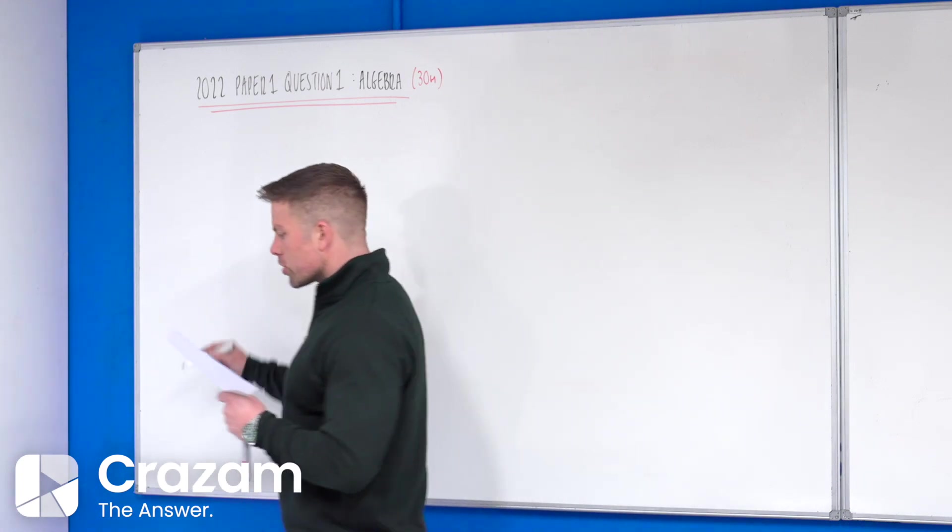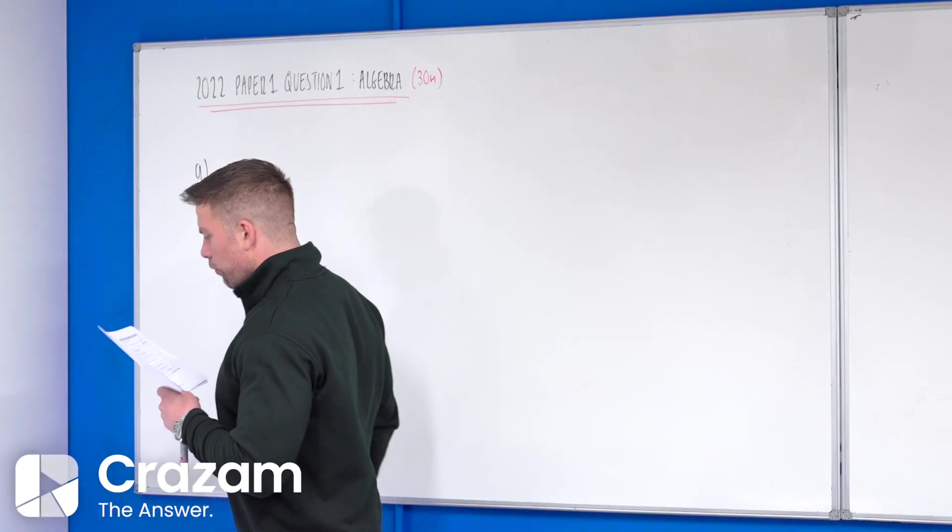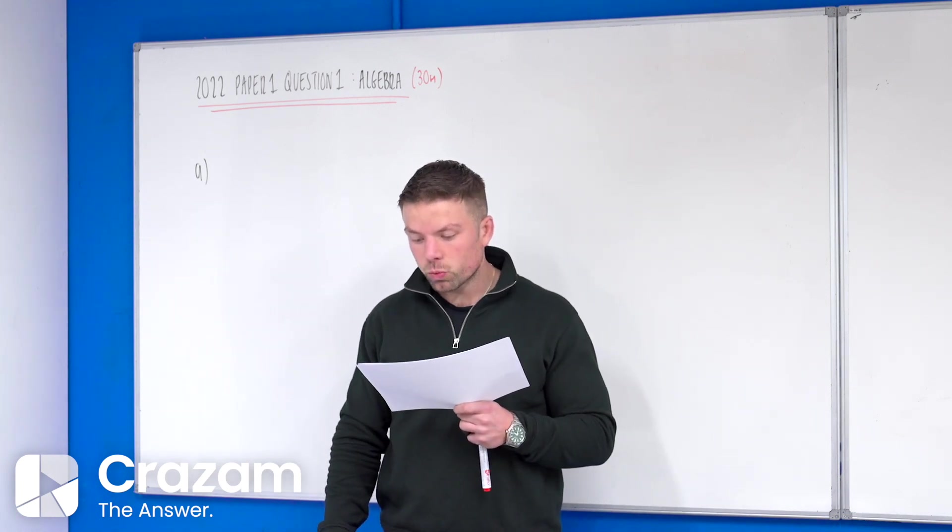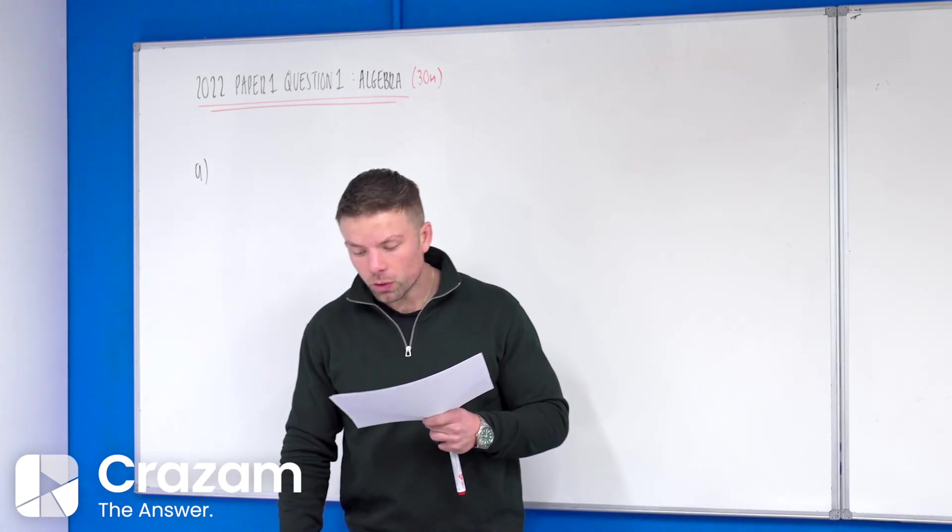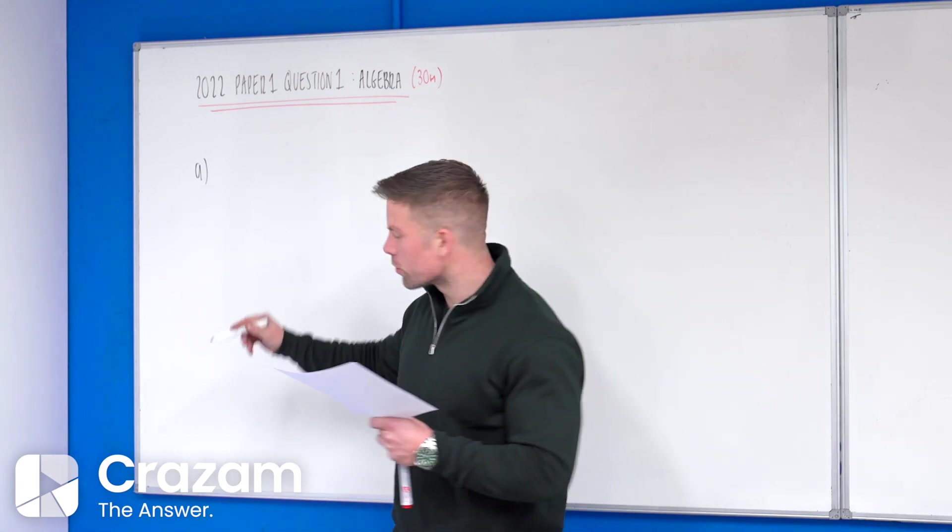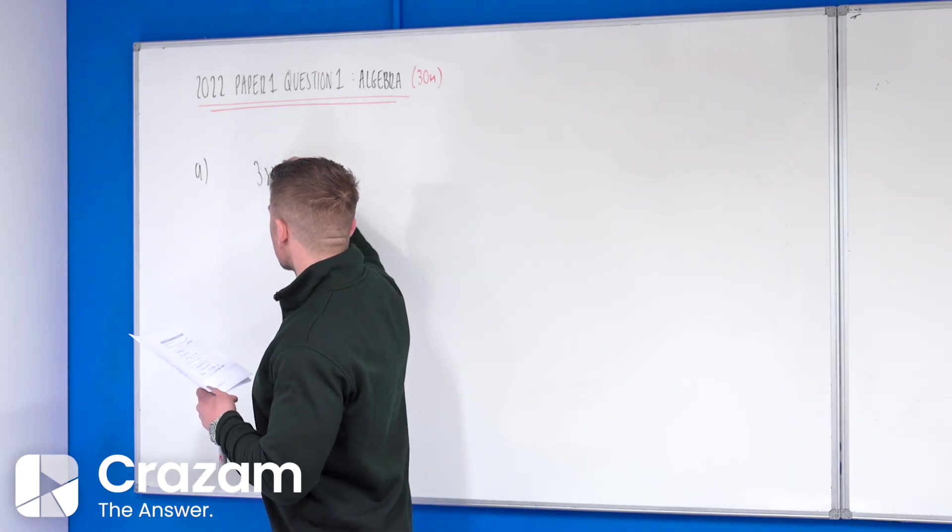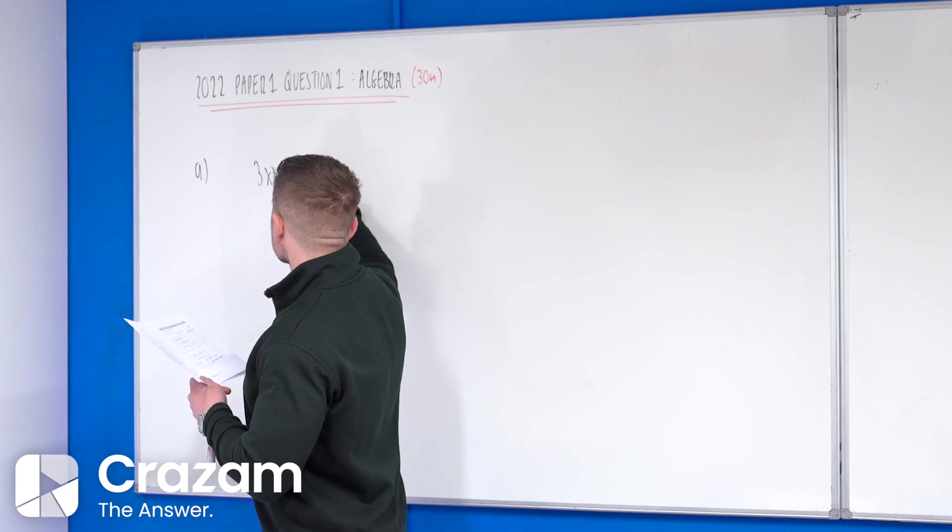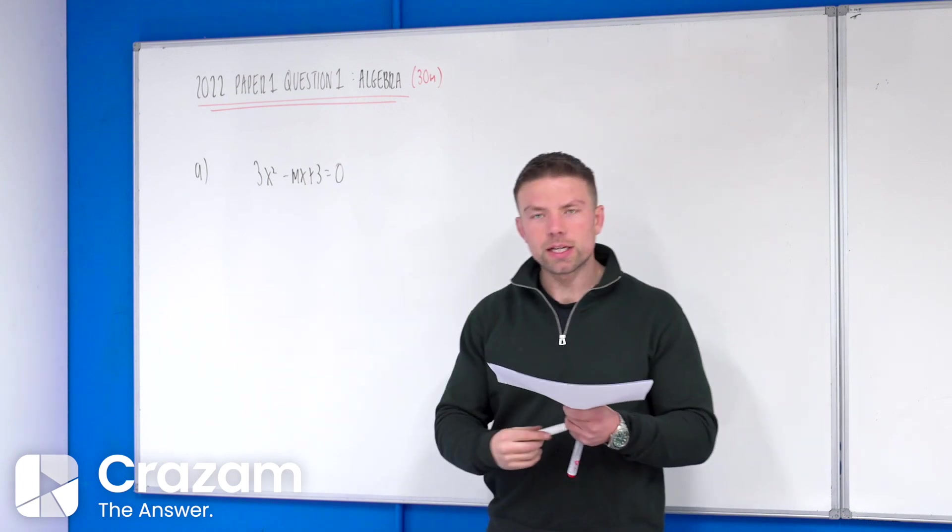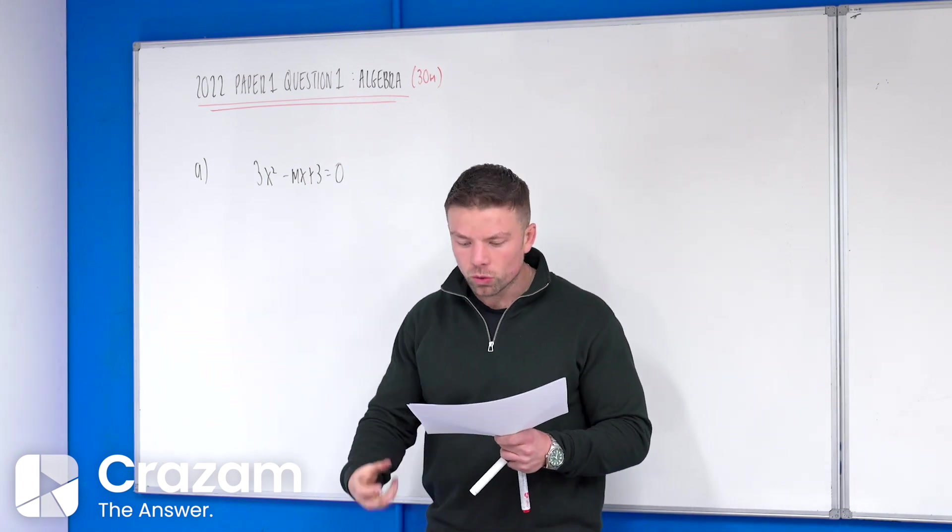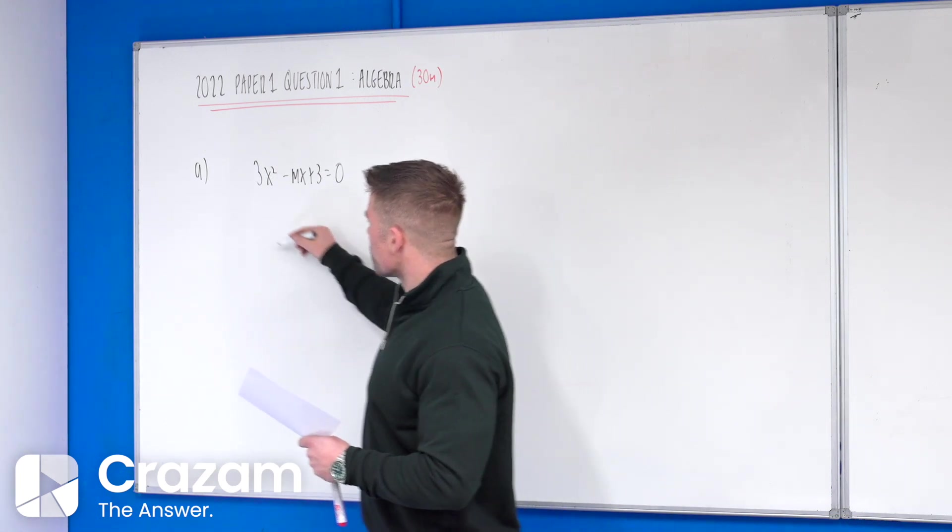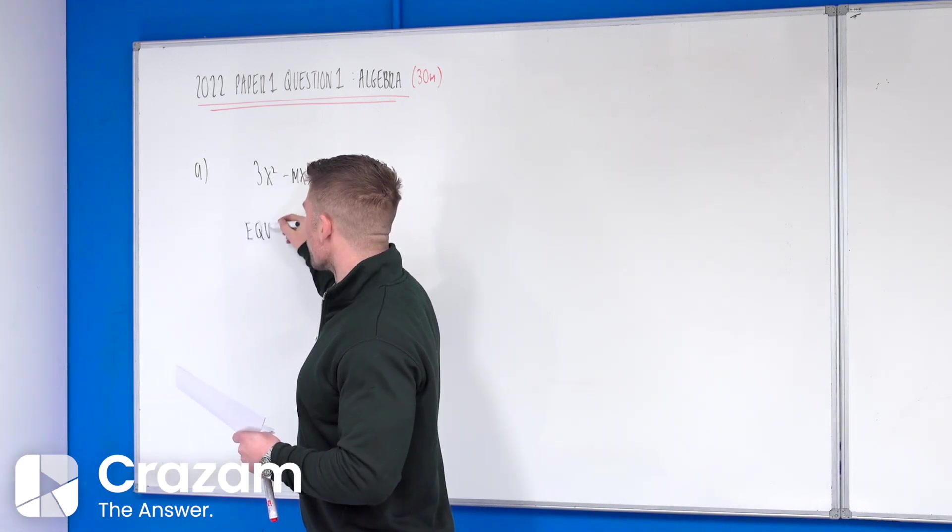We're on part A, which says find the two values of m, where m is an element of z, for which the following equation in x has exactly one solution. In bold, one solution. And they give us the equation of 3x squared minus mx plus 3 equals to 0. Now there is definitely a few different ways of doing this question. The way I would do it is I would latch on to the idea of one solution, which means that it has equal roots.